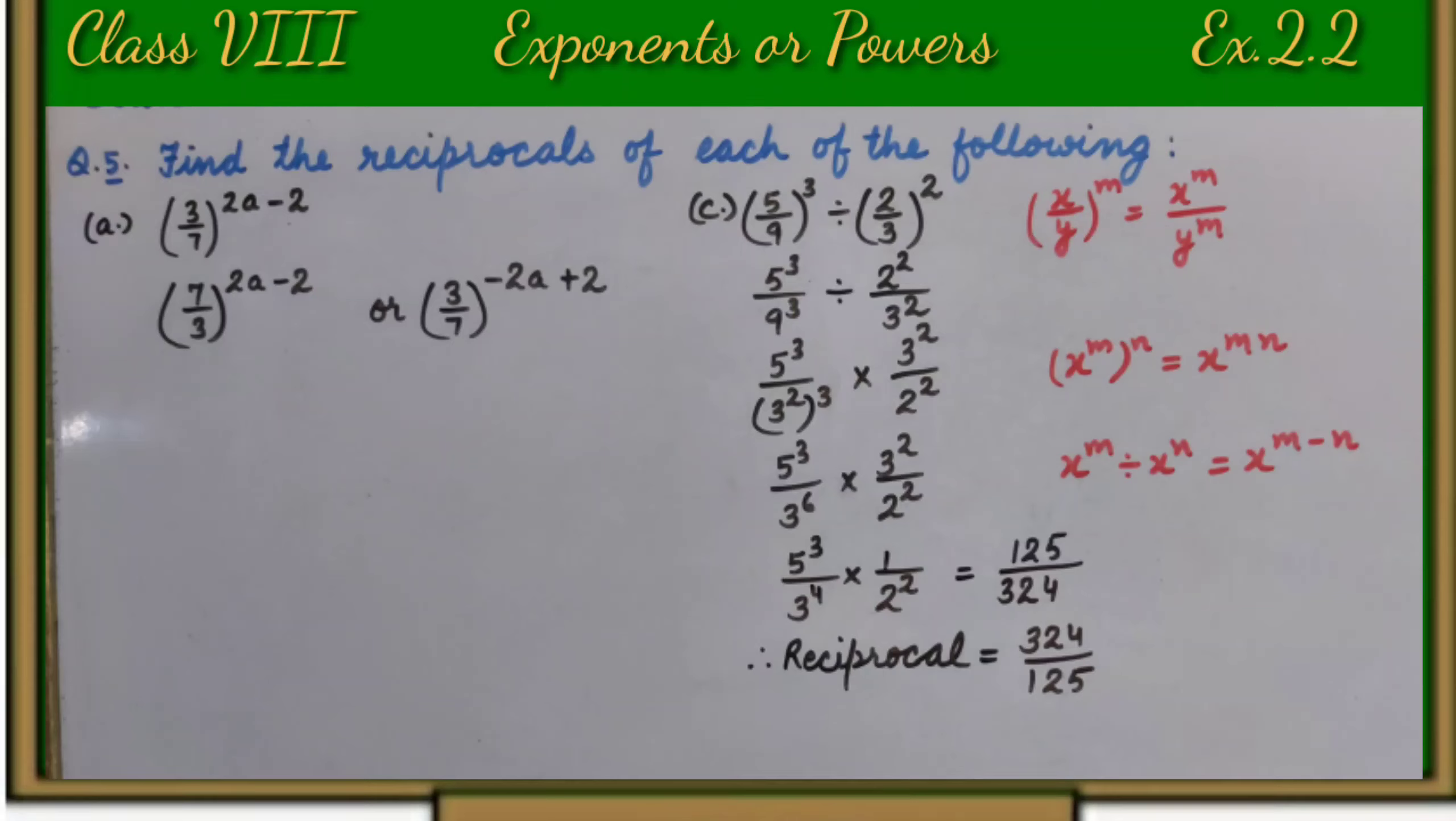Now we get 5 raise to power 3 upon 3 raise to power 4 multiplied by 1 upon 2 raise to power 2.